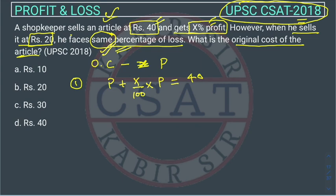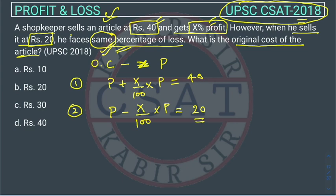In the second condition, he is selling at rupees 20. Since there is a loss, we use minus. The same percentage x percent loss applies, so p minus x percent of p equals 20 rupees. He gets a loss of x percent and the selling price is 20 rupees.